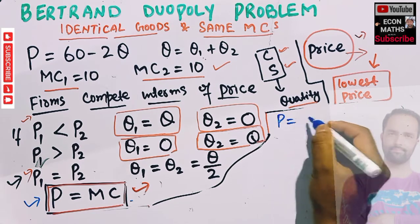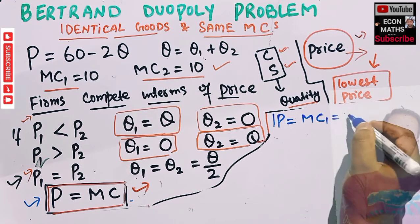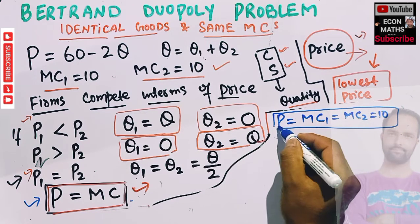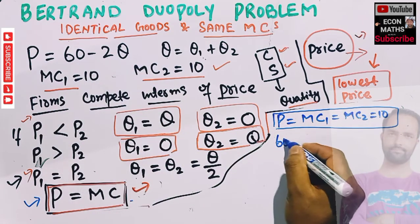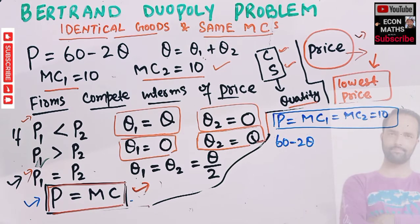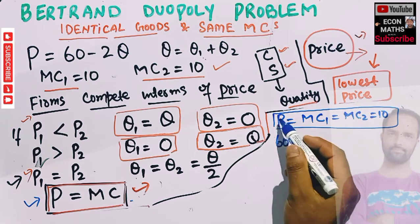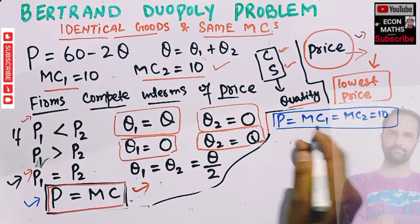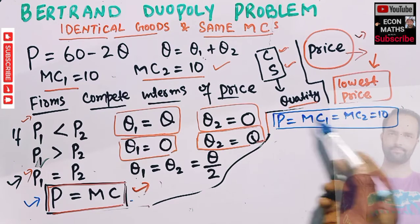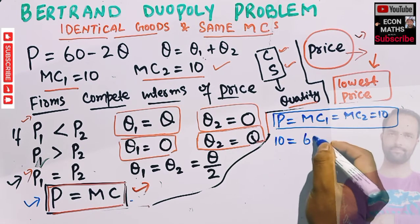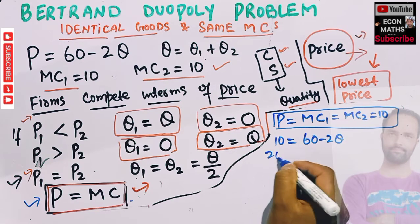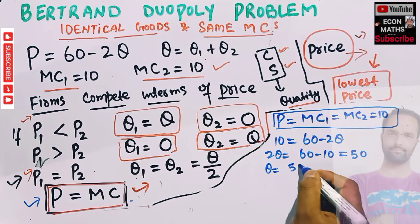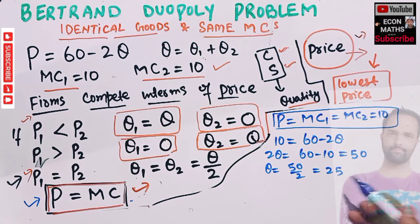Since price equals marginal cost, and marginal cost equals 10, we set P = 10. Given the demand function P = 60 − 2Q, substituting gives: 10 = 60 − 2Q, so 2Q = 50, therefore Q = 25. Total output in this market will be 25 units.